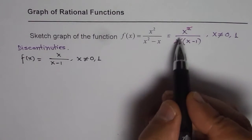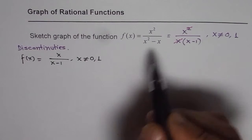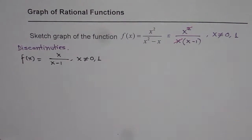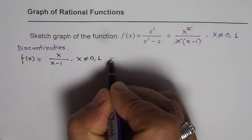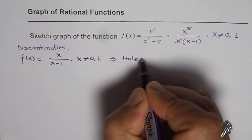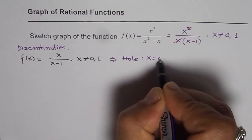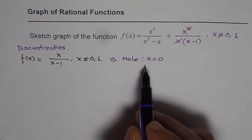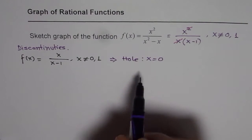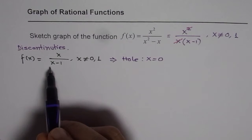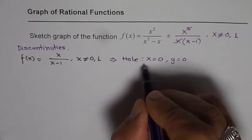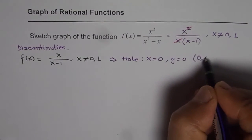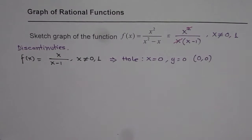The common factor x yields a hole. So we get a hole at x = 0. To find the y-value at that hole, we substitute 0 into the simplified function: 0 over (0 minus 1) = 0. That means the location of the hole is at the origin (0, 0). That is the first discontinuity.